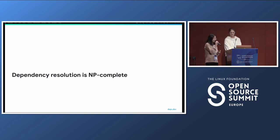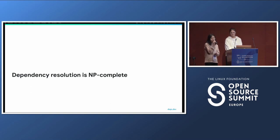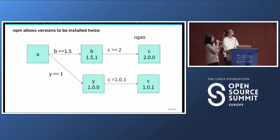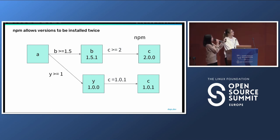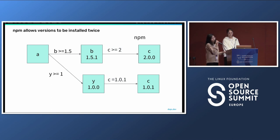You can imagine this can take a long time — and it does. At Deps.dev we've seen some package dependency resolutions out in the wild that take hours to complete, if at all. To get around this, some resolvers change the definition of the problem. For example, in NPM the resolver allows packages to be installed multiple times at different versions. So rather than doing the hard work of finding incompatible requirements, multiple versions of a package are allowed. With conflicting constraints of C greater than or equal to 2 and C equals 1.0.1, the result is two versions installed: C at 2 and C at 1.0.1.